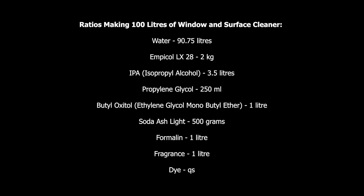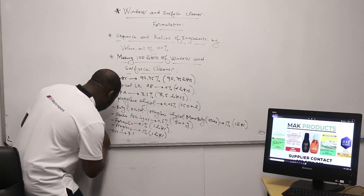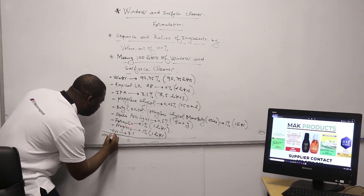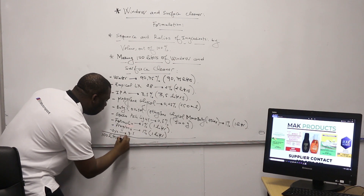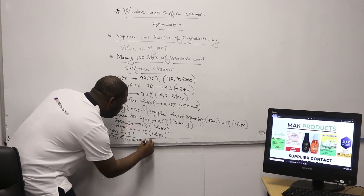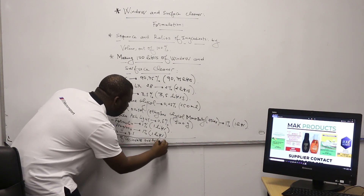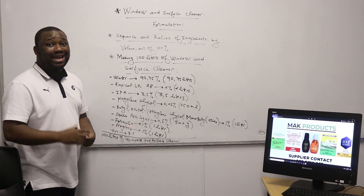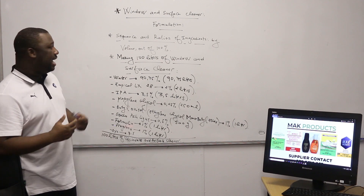Finally, the dye — we say QS, which means quantity sufficient. Put the dye according to the appearance you want to give to your product. By doing this you obtain 100 liters of window and surface cleaner. Thank you guys for watching — make sure that you subscribe to the channel.